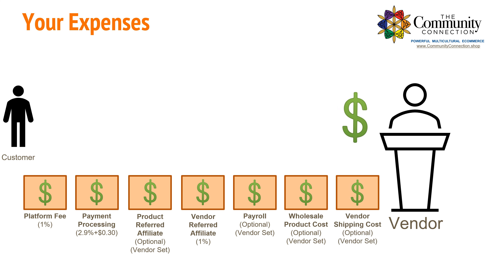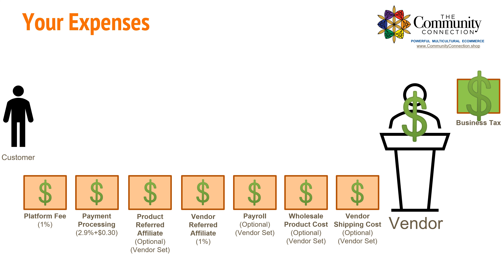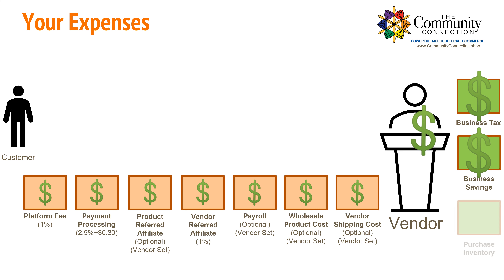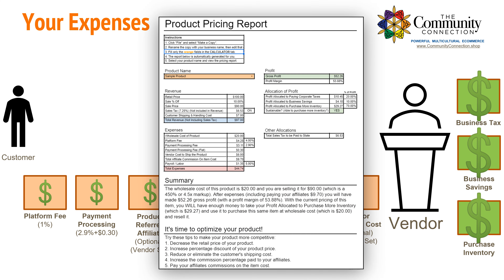The amount you have left over is your gross profit, which we recommend you set aside 20% to pay your business taxes, 10% to deposit into your business savings, and 70% to purchase more inventory and grow your business. To help you calculate this, we'll provide you with a product pricing tool that lets you price thousands of products and instantly gives you insight on future sales.